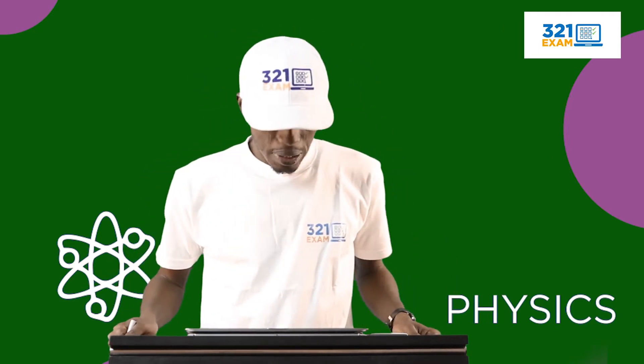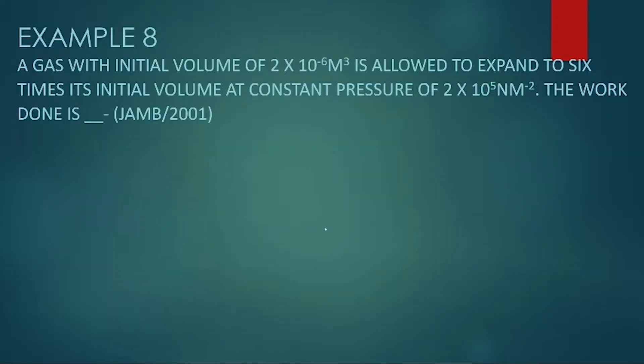Now we are going straight to the 8th example, and this is extracted from JAMB 2001. I read, a gas with initial volume of 2 times 10 raised to the power of minus 6 cubic meters.